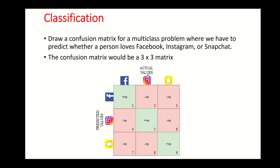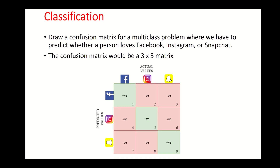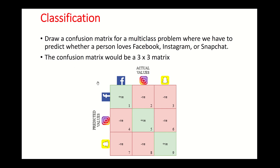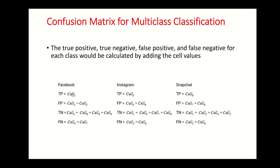The confusion matrix can also be used for multi-class classification. Here is an example predicting whether a person uses Facebook, Instagram, or Snapchat more. You are given the actual values and the predicted values. Cells 1, 5, and 9 are the true positives for each class respectively.